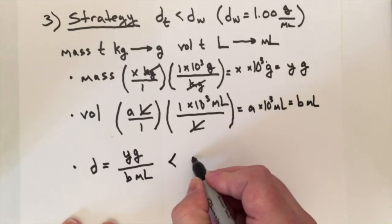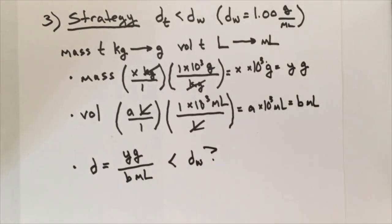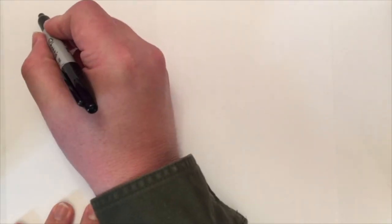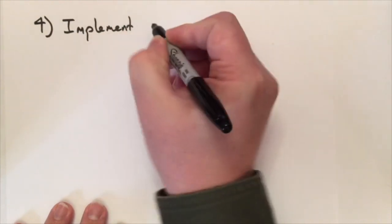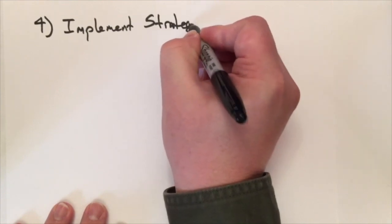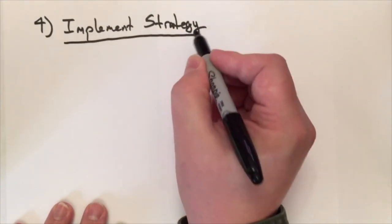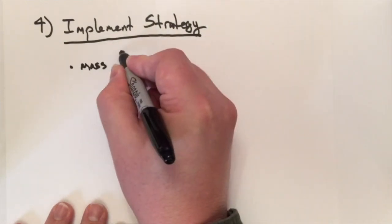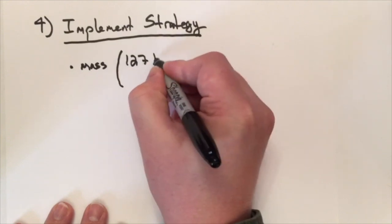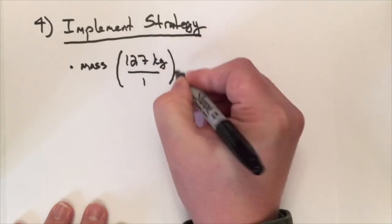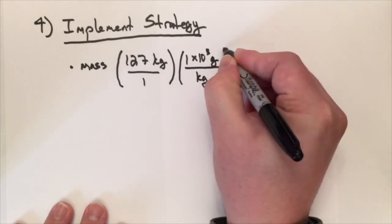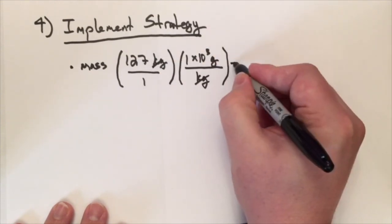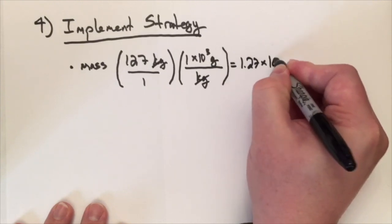We're looking to see if that density is less than the density of water. Now we implement this strategy by plugging in the values given in the problem. The mass of toluene is 127 kilograms times the conversion factor, 1 times 10 to the 3 grams per kilogram. Kilograms cancel out, and we're left with 1.27 times 10 to the 5th grams.